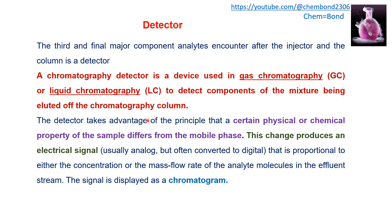A detector takes advantage of the principle that certain physical and chemical properties of the sample differ from the mobile phase. There are differences in physical and chemical properties between the mobile phase and the sample. This change in property produces an electrical signal proportional to either the concentration or mass flow rate of the analyte in the effluent stream, and that signal is displayed in the form of a chromatogram.